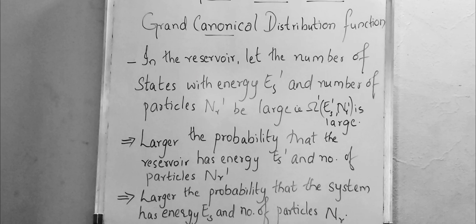In the reservoir, let the number of microstates having energy E_S' and number of particles N_R' be very large. The larger the number of states available to the reservoir with a particular energy and a particular number of particles, the higher the probability that the reservoir has energy E_S' and number of particles N_R'.